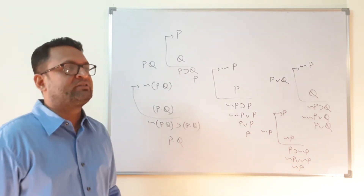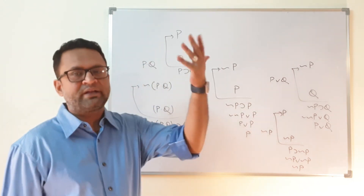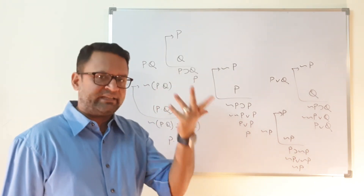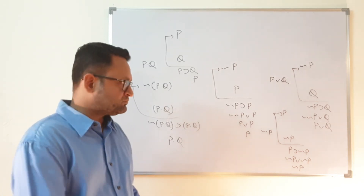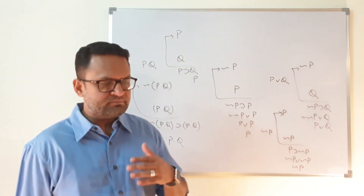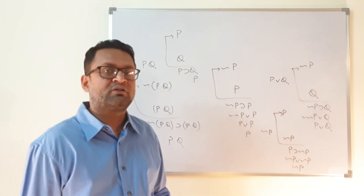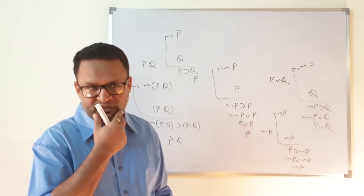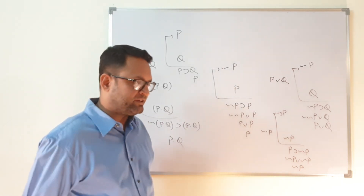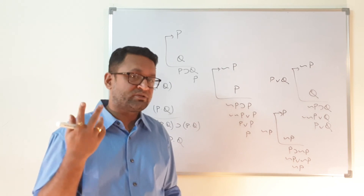These are the things to keep in mind. The question P·Q ≡ Q·P is the simplest that can be asked, and remembering that transposition changes atom positions helps you construct the proof nicely. You can now attempt questions like exportation and association on your own. In the next part of the lecture we will solve more difficult questions like De Morgan's law and distribution. Thank you.